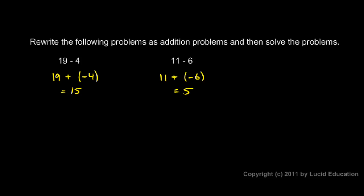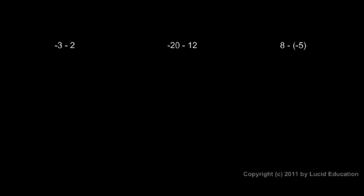We can do this regardless of whether the numbers are positive or negative. Here are three more examples. In each case, we will rewrite the problem as an addition problem and then solve it. So negative 3 minus 2 can be written as negative 3 plus the opposite of 2. And negative 3 plus negative 2, those add up to negative 5.